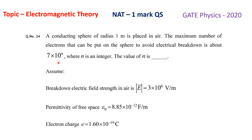The value of n is what we have to find. We assume the breakdown electric field strength in air is |E| = 3 × 10⁶ volt per meter, the permittivity of free space is ε₀ = 8.85 × 10⁻¹² farad per meter, and the electronic charge is 1.6 × 10⁻¹⁹ coulomb.